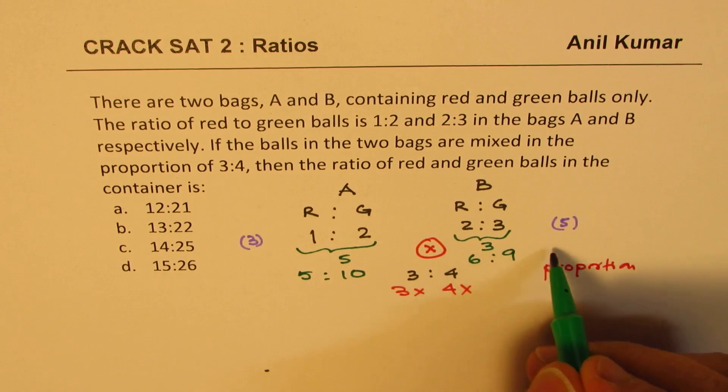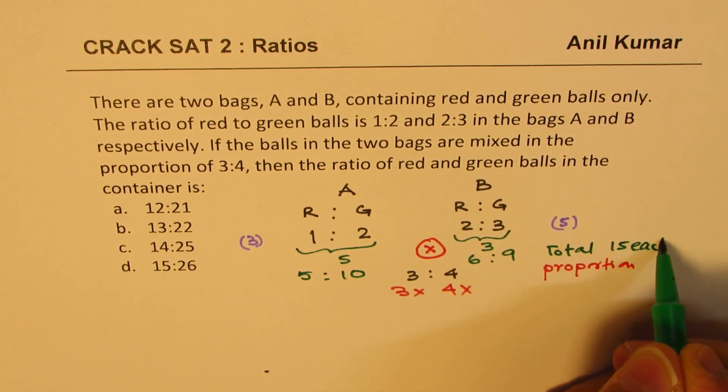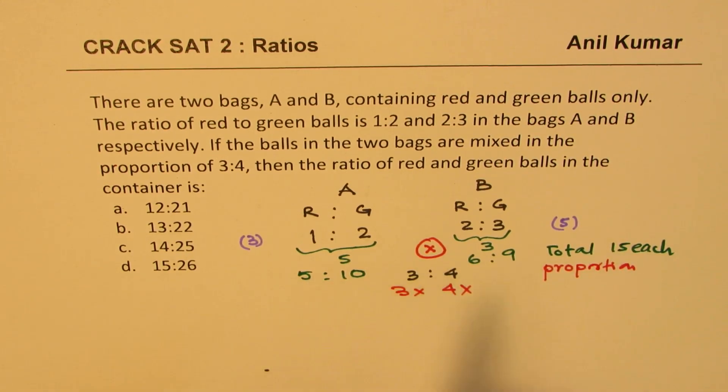So now you know the total is 15 each. So in each bag, now we have same number of balls. You get the concept. We get the same number of balls in both. Now, this x value is same, which is 15 for both of them.